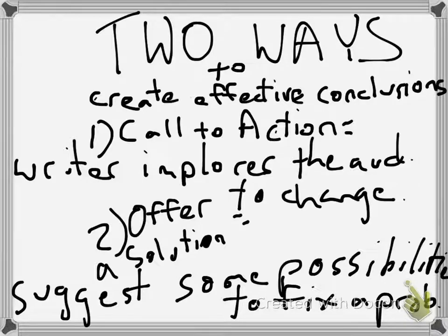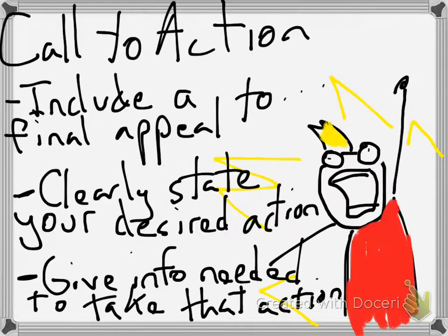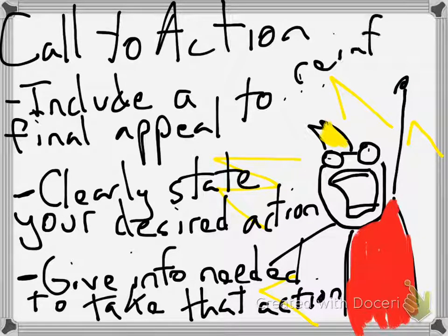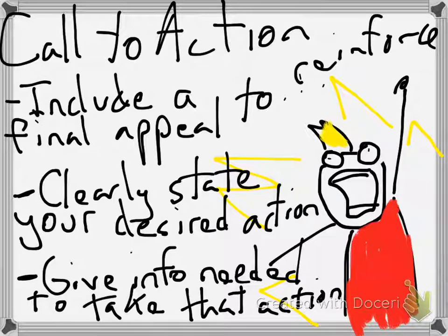So these are the two ways to focus on when creating effective conclusion paragraphs for persuasive writing. Call to action: you're including a final appeal to reinforce your argument. You clearly state your desired action — you forcefully tell them what they need to do — and you give information needed to take that action.